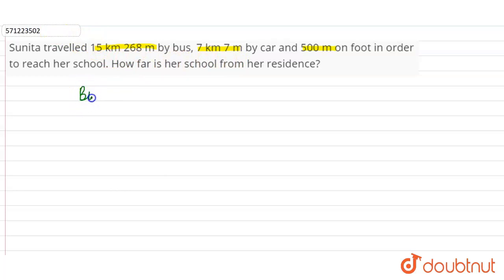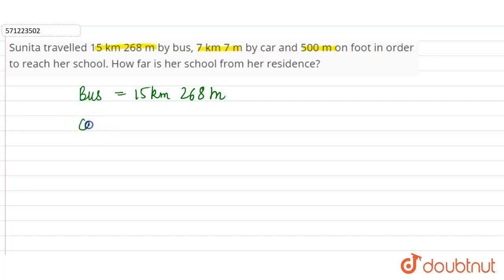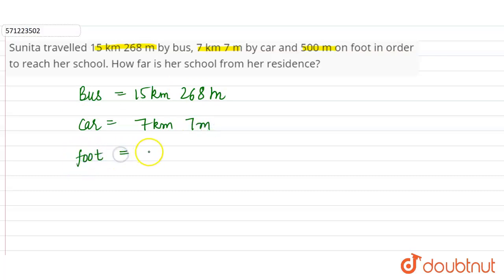Firstly, the distance covered by Sunita by bus is 15 kilometers 268 meters. By car, she traveled 7 kilometers 7 meters. And by foot, she traveled 500 meters.